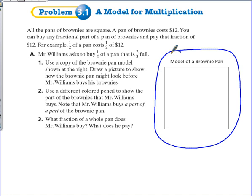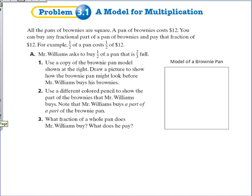Now let's introduce the situation. So all of the pans of brownies are square. A pan of brownies costs $12. You can buy any fractional part of a pan of brownies and pay that fraction of $12. For example, half of a pan costs half of $12.